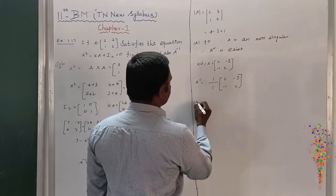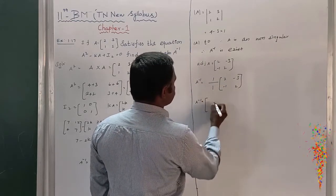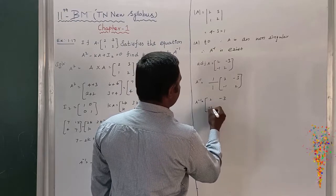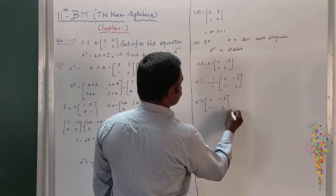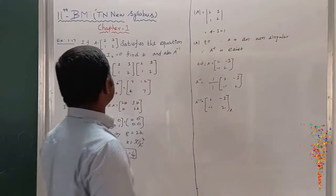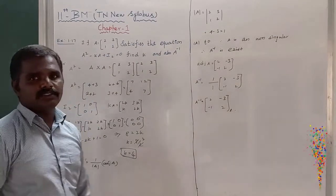1 divided by 1 is 1. Therefore, A inverse = [[2,-3],[-1,2]]. This is the A inverse of matrix A, 2 by 2 minor [[2,3],[1,2]].